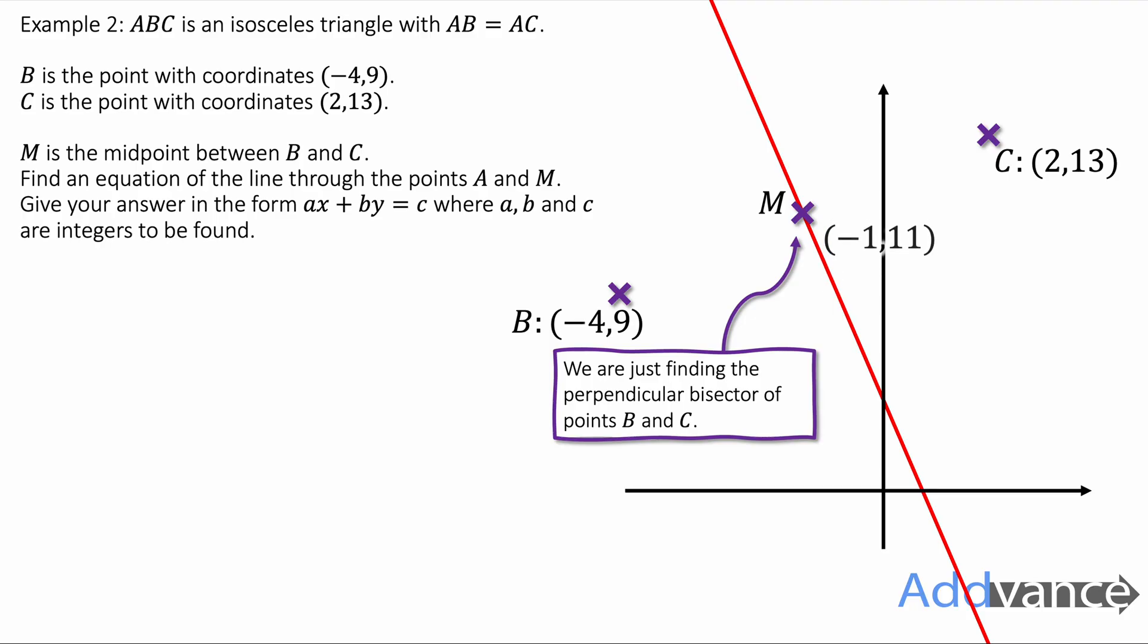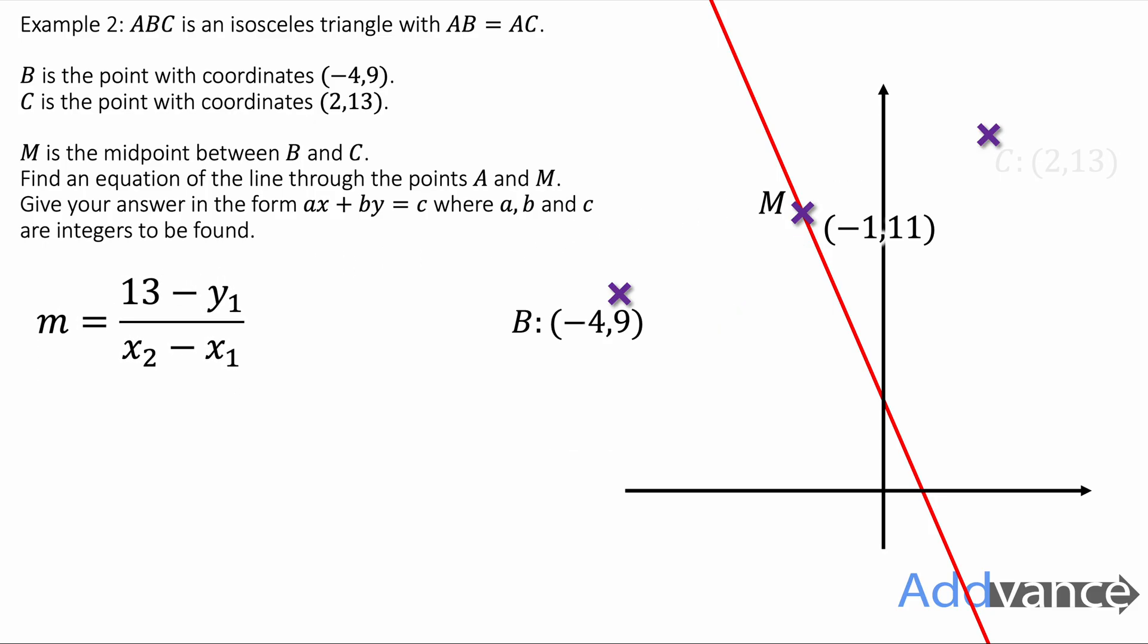Now let's find the gradient between B and C. We've also found the midpoint there which is (-1, 11). That's the midpoint. The gradient looks like this. We substitute the numbers in to find the gradient between B and C. That gives a gradient of 4/6 or 2/3.